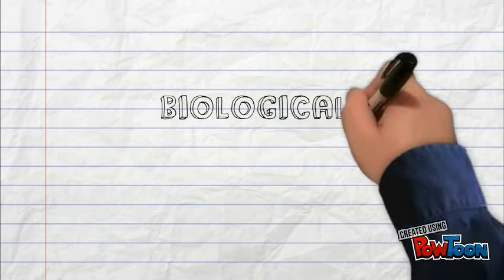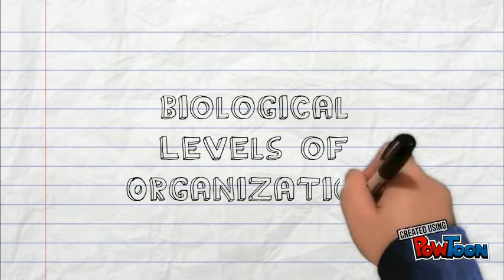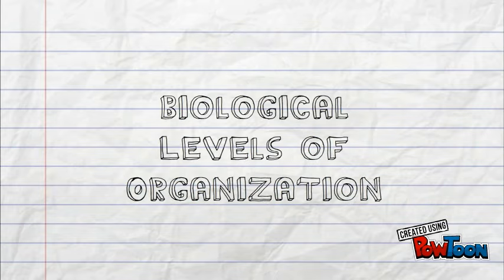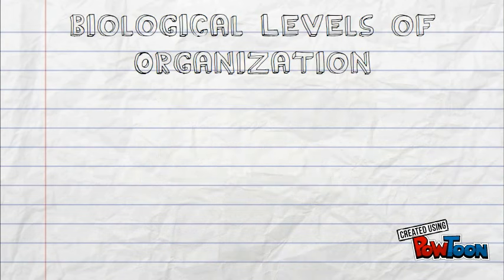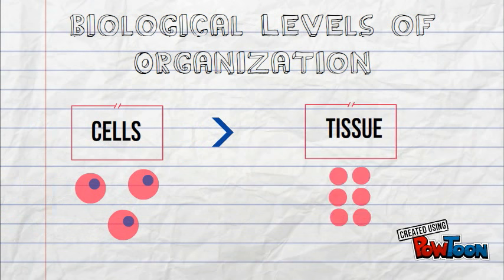So we know that cells are the smallest unit of life and that they come together to form an entire organism. But what happens in between? This is called the levels of organization in biology. So we start with cells. Cells duplicate to form tissues.